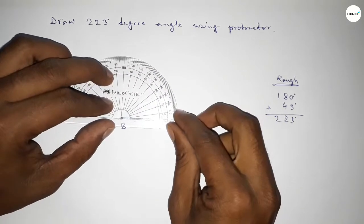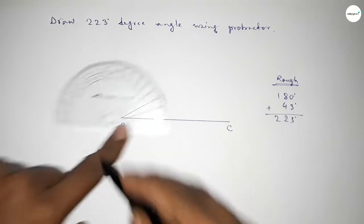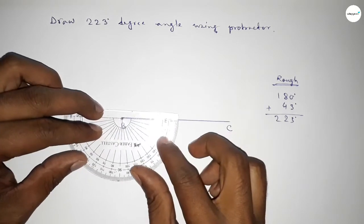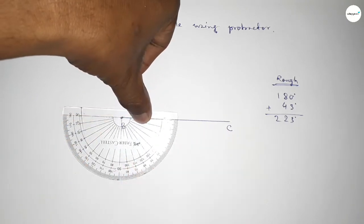Putting the protractor on point B by this way and counting 180 degrees. So this is 180 degrees. Plus, putting the protractor on point B by this way and counting 43-degree angle.